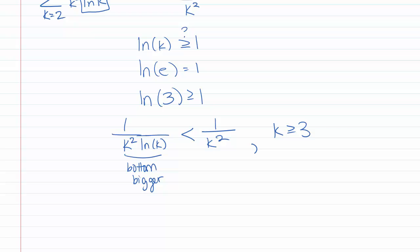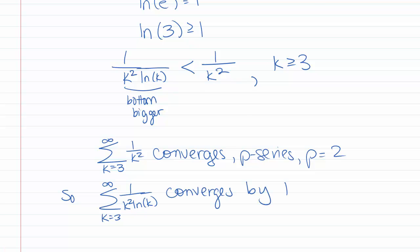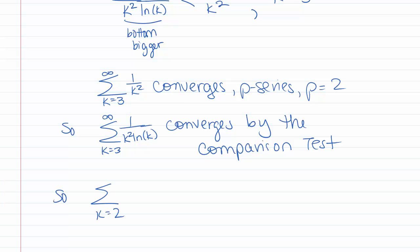With series we really care about just the tail. So we can say that the sum k equals 3 to infinity of 1 over k squared converges, because it's a p-series with p equal to 2. Therefore, the sum k equals 3 to infinity of 1 over k squared times natural log of k converges by the comparison test. So then the sum k goes from 2 to infinity of 1 over k squared times natural log of k converges, because you can add terms to the beginning of the series without changing whether it converges.